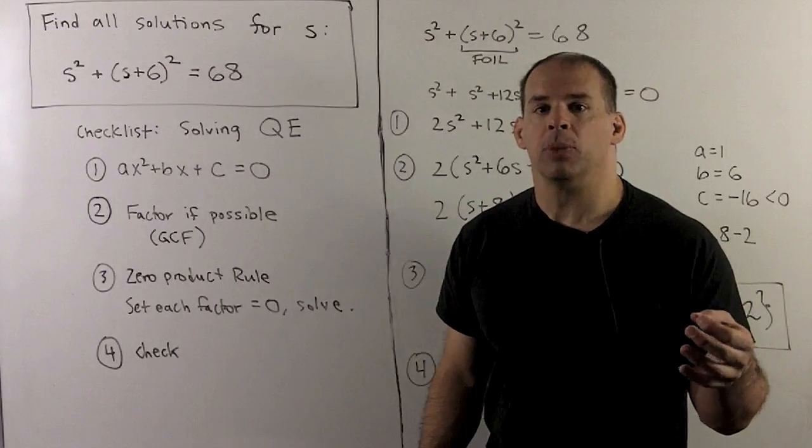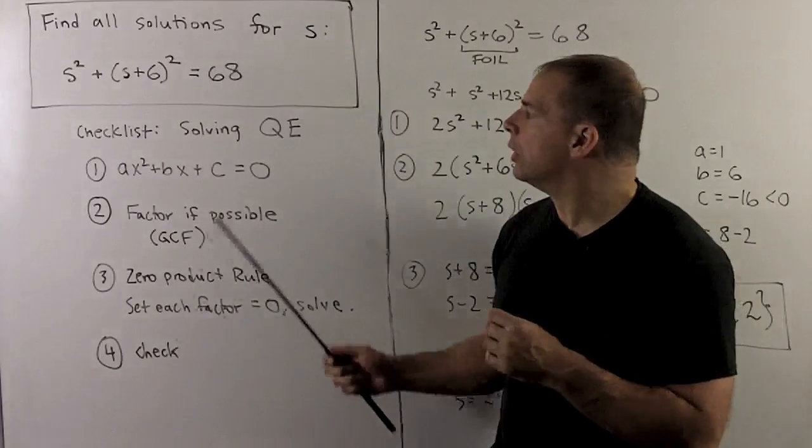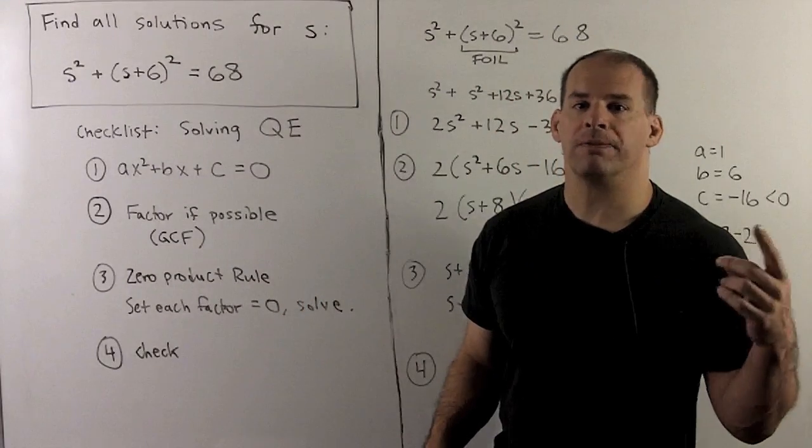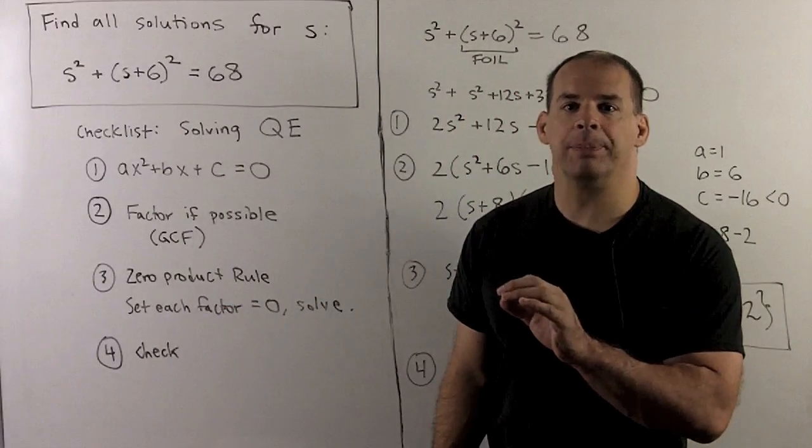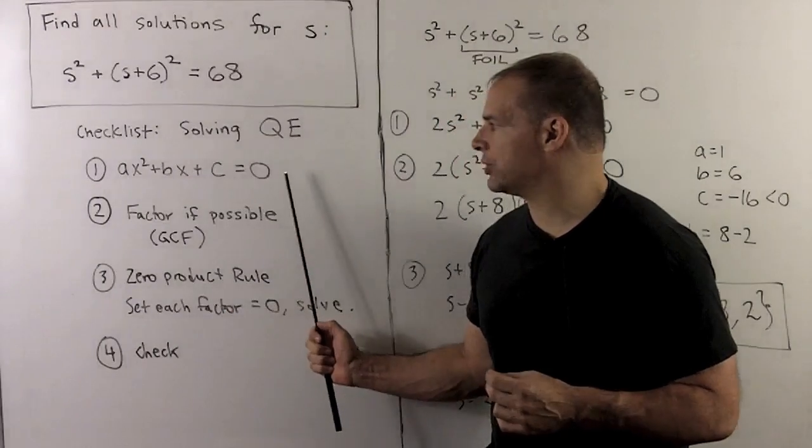Instead of just jumping into the problem, we put down a checklist. If I want to solve a quadratic equation using the zero product rule, first step, I want to simplify our equation. We'll put everything on one side and try to get it into the form AX squared plus BX plus C equals zero.